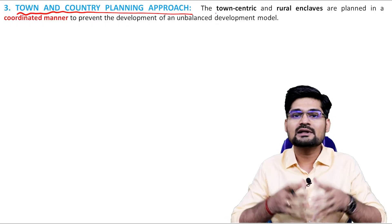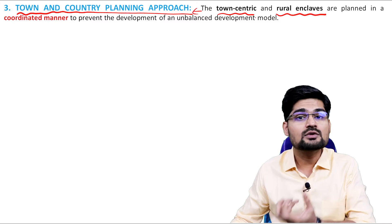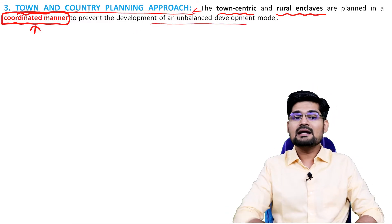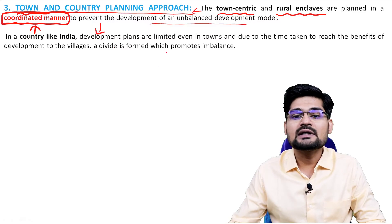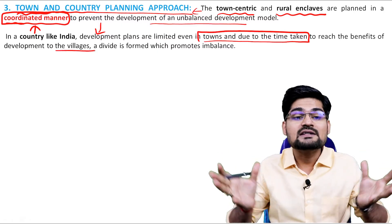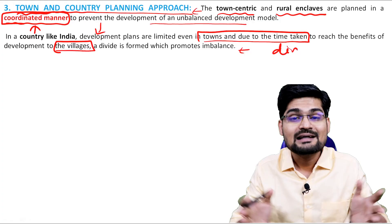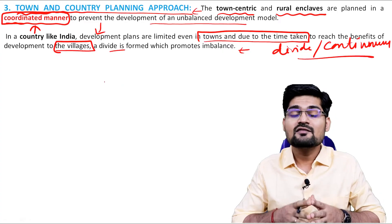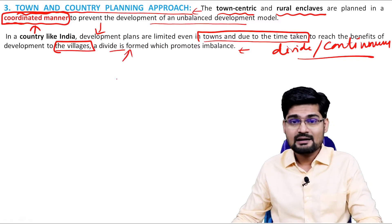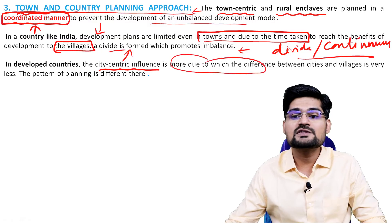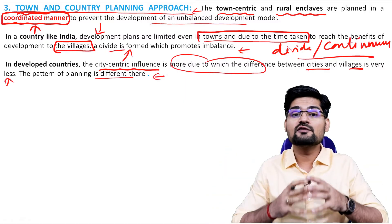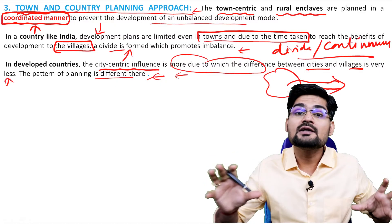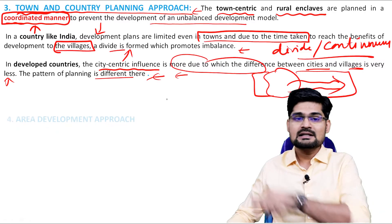When a city develops as a center, resources from all around concentrate into it, causing a lot of developmental activity in the city center but also an imbalance between cities and villages. Through planning, we need to reduce this imbalance between metropolitan cities and their hinterland areas, ensuring adjacent rural areas are included in the metropolitan planning approach. The town and country planning approach coordinates town-centric and rural enclave planning together to reduce imbalances caused by urbanization.